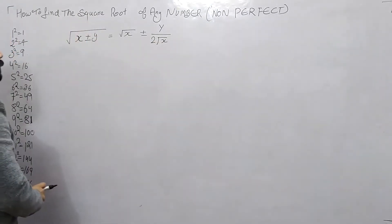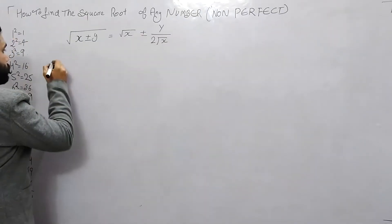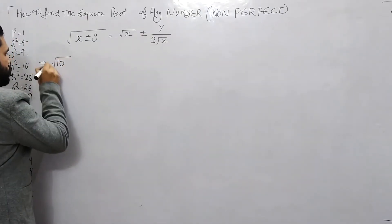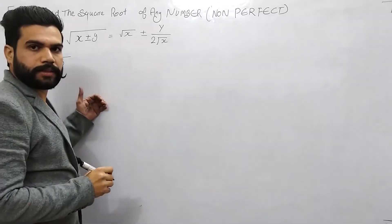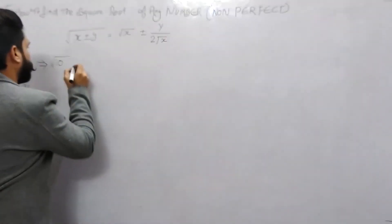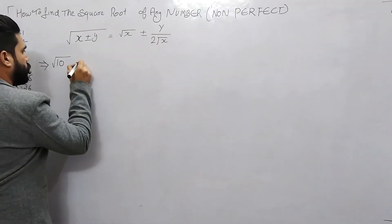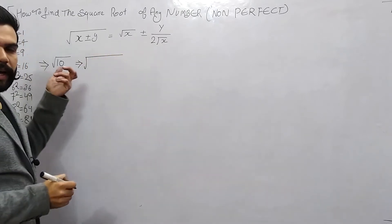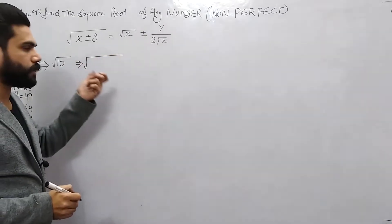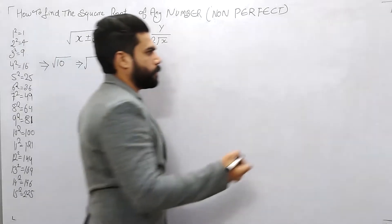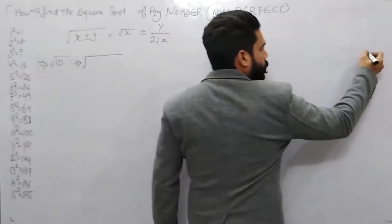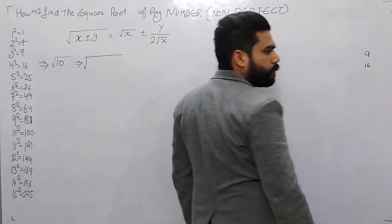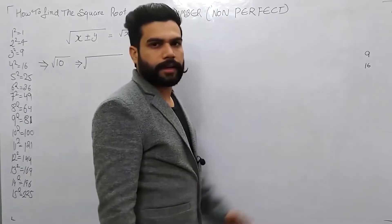Let's take the first example: 10. It's a non-perfect square root. So how do we do it? We have to find which perfect square is closest to 10. I think it's 9. After 9, the next one is 16. So 4 squared is 16, and 3 squared is 9.